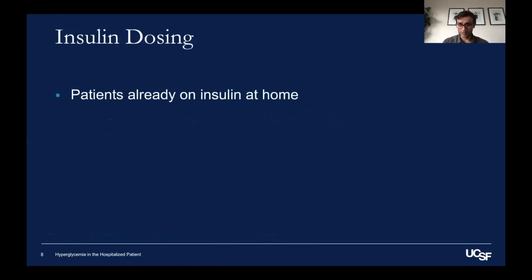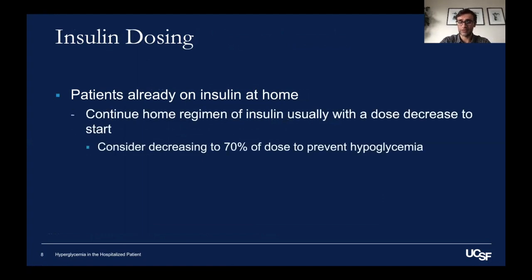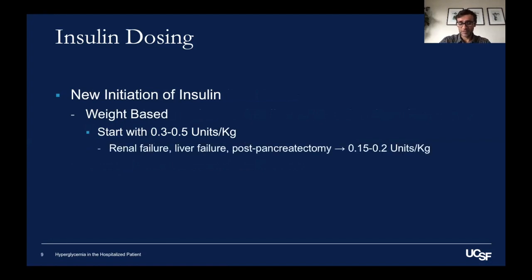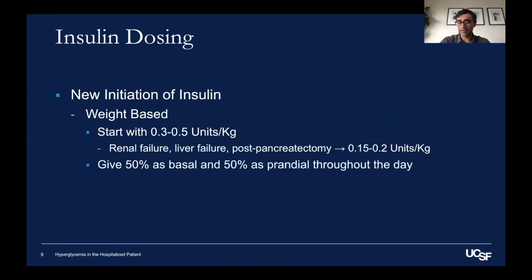In most patients, it's best to mimic physiologic insulin secretion and we do that via the basal bolus method. If your patient is already on insulin at home, we will generally continue their home insulin regimen at a decreased dose — a good starting point is 70% of their home dose. If the patient is very ill, discontinue their oral hypoglycemic medications as well. To start insulin de novo, we use a weight-based approach: 0.3 to 0.5 units per kilogram. In cases like renal failure or liver failure, we use 0.15 to 0.2 units per kilogram. We give half as a basal dose and half as prandial doses throughout the day, and then add sliding scale insulin on top.